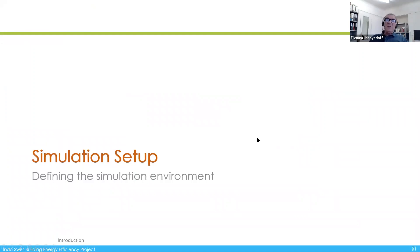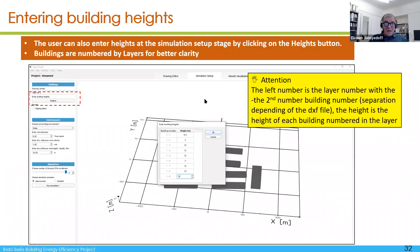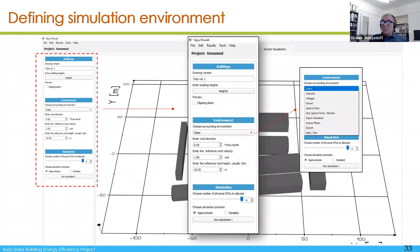Once you have prepared your layers, you can enter the simulation setup tab. In the simulation setup you can still modify the height of buildings, with the first number being the layer and the second number being the building number. This is the height from the bottom to the top of the layer. Then you have to define the environment variables: you have to enter the height, and then choose the surrounding environment — this is the wind profile, which you choose from options ranging from suburbs to lake or sea.